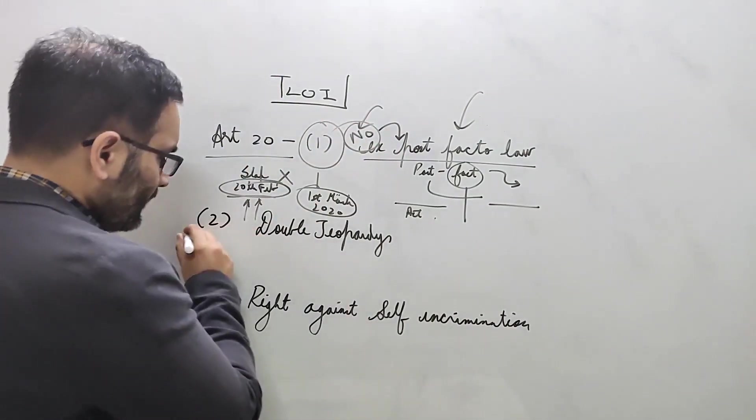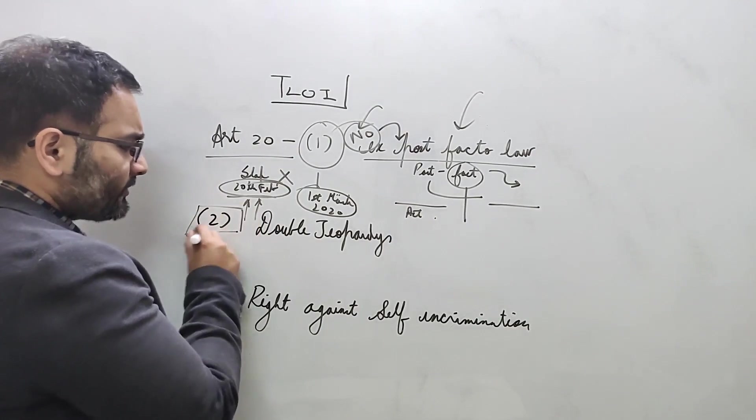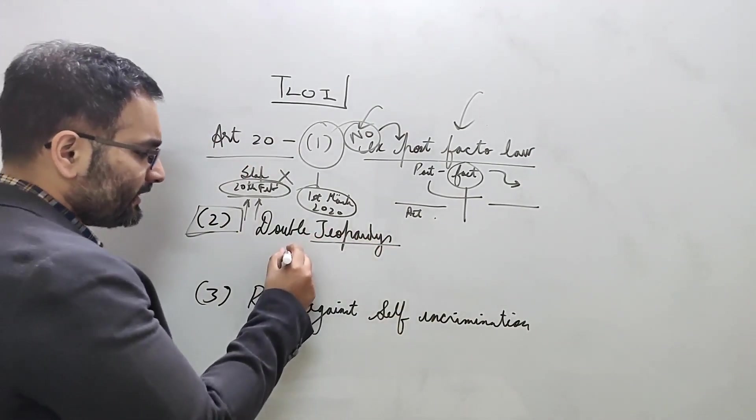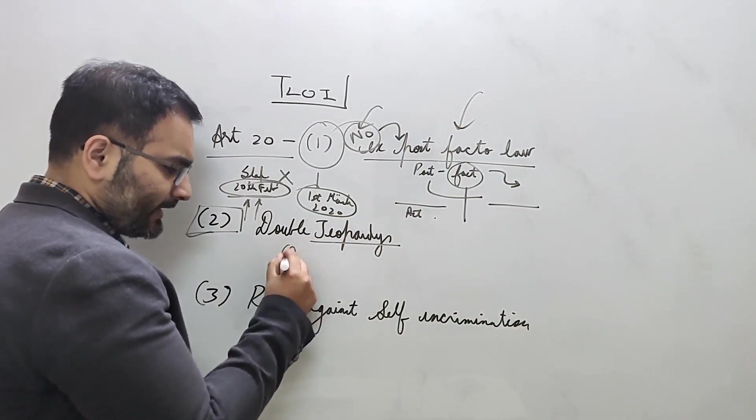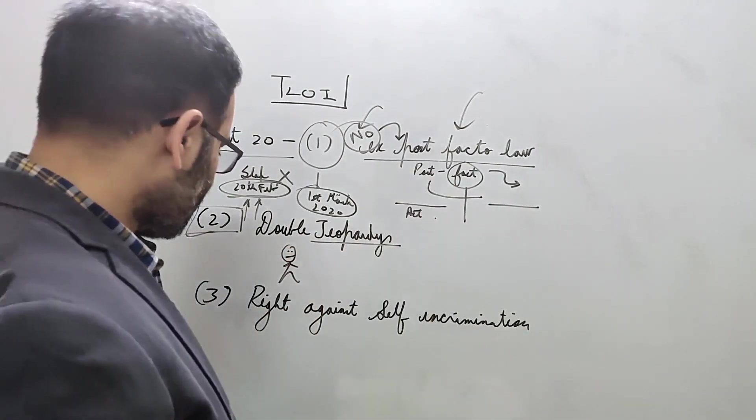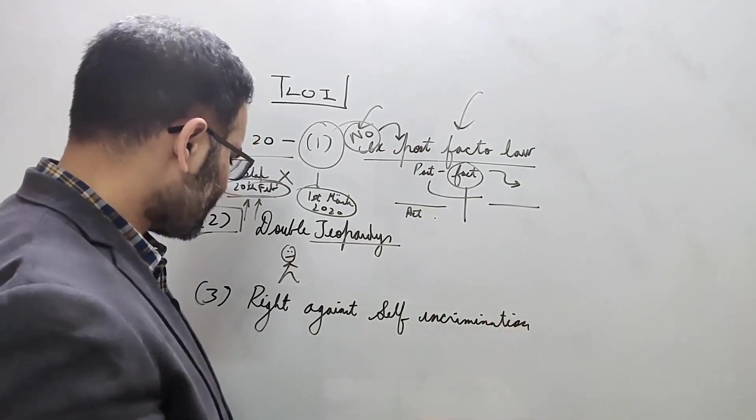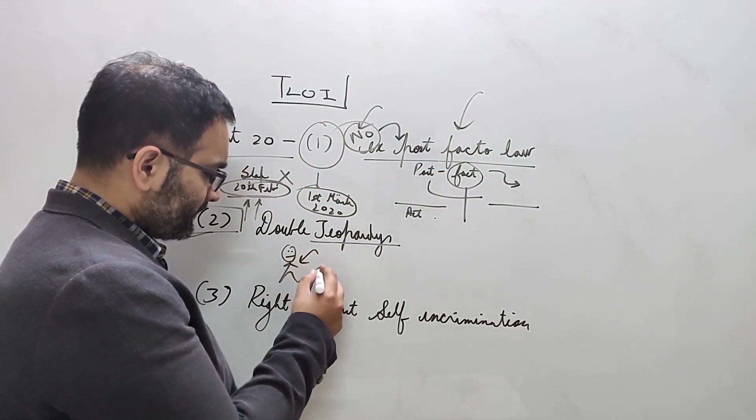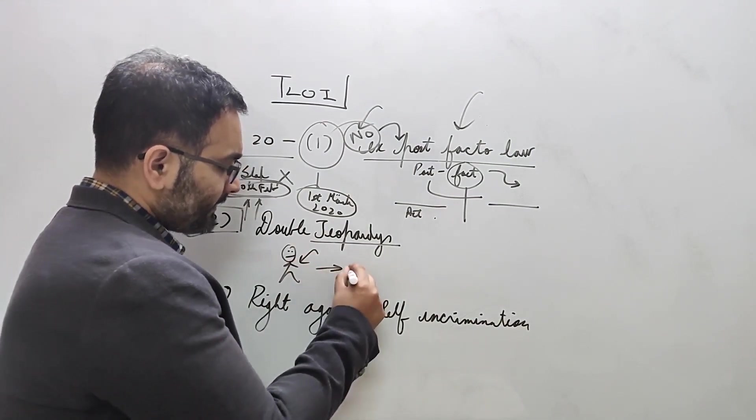Clause 2 is talking about the doctrine of double jeopardy. What is double jeopardy? Let's say your phone gets snatched on the road - hopefully it never does, but presumably it does - and then this guy gets convicted for, hypothetically, one year.